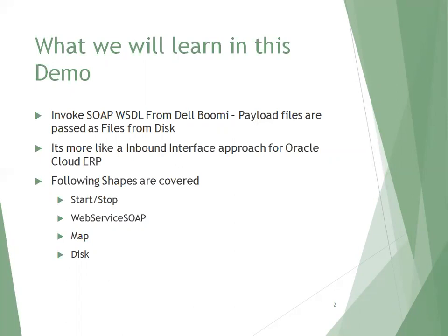From a Delbomi perspective, the shapes involved are the web service shape, the map shape, and the disk shape. We are reading a list of files with the .xml extension and for each file we are invoking the web service. The disk shape we discussed earlier in previous samples, and SOAP web service is the first time we are discussing it in this demo.